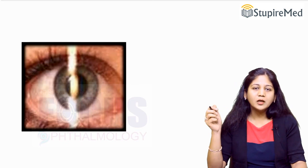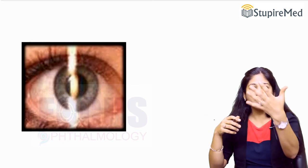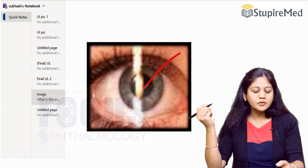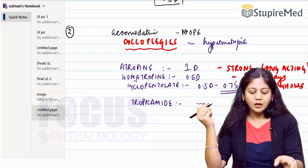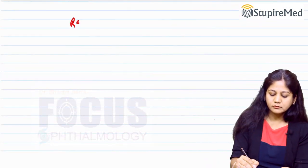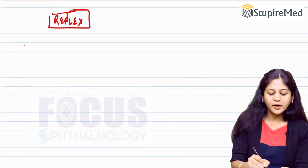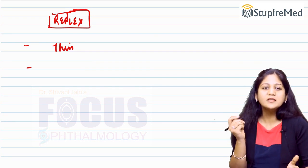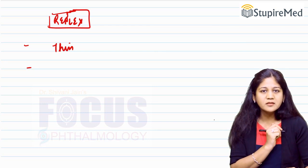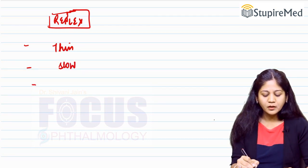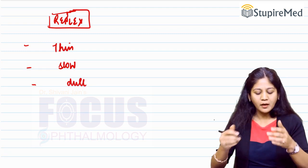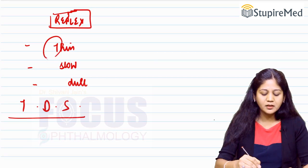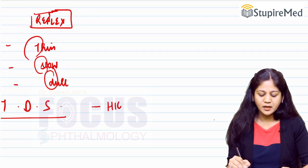When we show a self-illuminating retinoscopy light in the patient's eye, a reflection appears in the pupillary area and we must study this reflex. The reflex could be a thin reflex that moves very slowly and appears dull. When you have these three characteristics — thin, slow, and dull — this suggests that the patient has a high refractive error.